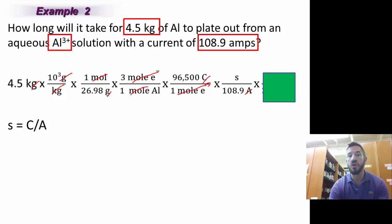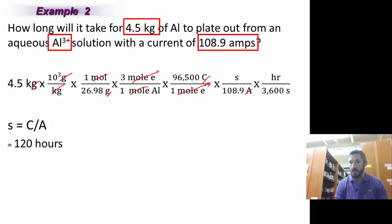And then we want to know, how long will it take? We want to change, oh that's such a long time, let's change it to hours. So we'll say there's 3,600 seconds in one hour. And then we'll get our total time. Our total time is 120 hours.